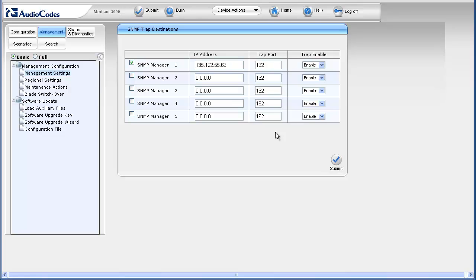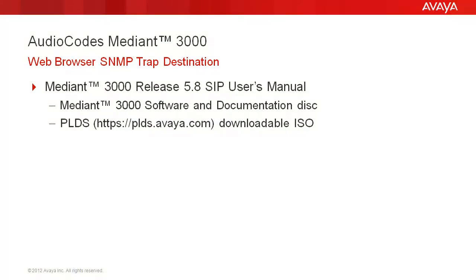Administration for specifying an SNMP Trap Destination is complete. For additional information on using the web browser graphical user interface and media gateway configuration, reference the Mediant 3000 Release 5.8 SIP users manual. Media gateway documentation is contained on the Mediant 3000 software and documentation disk or in the ISO available for download from plds.avaya.com.